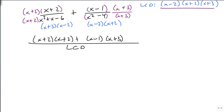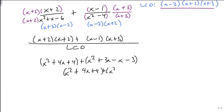So now that I know that, I can multiply this through and get x squared plus 4x plus 4. This is a perfect square trinomial. Plus x squared plus 3x minus x minus 3. So this is x squared plus 4x plus 4 plus x squared plus 2x minus 3.